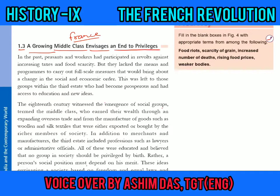Here we are going to read how the middle class envisaged — meaning they conceived a possibility for a future event — and how to end the privileges or the special conditions that the rich people enjoyed. In the past, the peasants and the workers had participated in revolts against increasing taxes and food scarcity, but they lacked the means to carry on such full-scale measures that would bring about a change in the social and economic order.